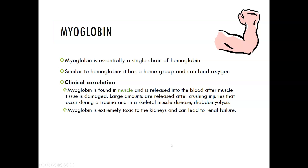Myoglobin is essentially a single chain of hemoglobin. It is similar to hemoglobin — it has a heme group and can bind oxygen — but it is found in muscles, whereas hemoglobin is found in red blood cells.